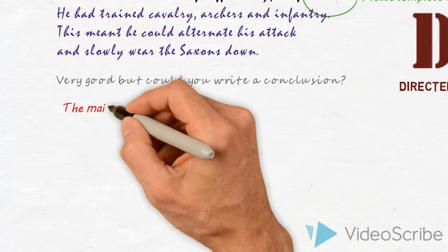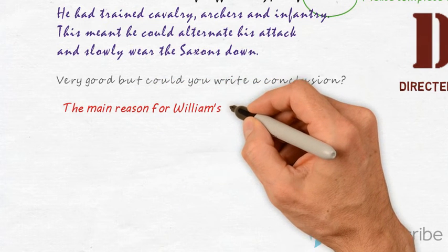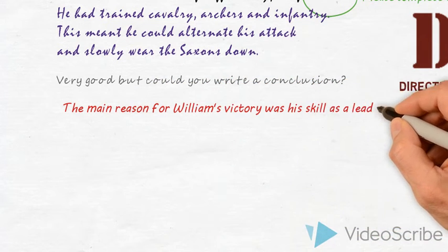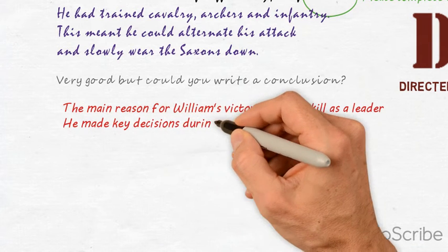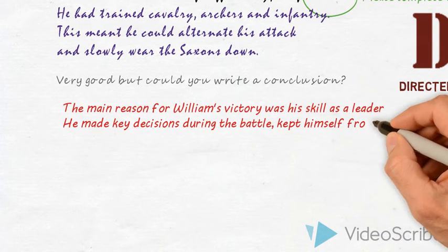If a pupil is having difficulty writing, then sometimes an adult might write for them. If this is the case, then the work will be in red, so we know it is the pupil's work, written by an adult.